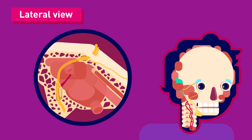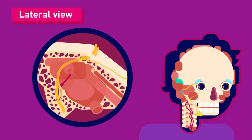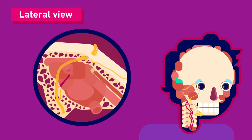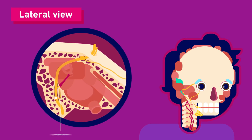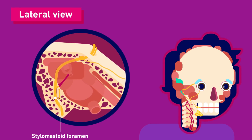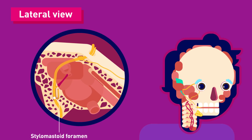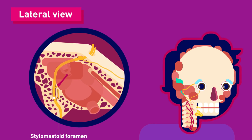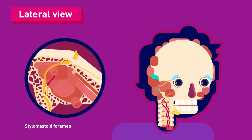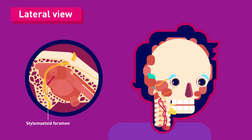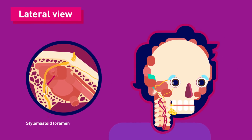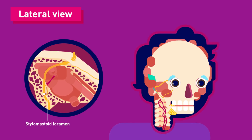The facial nerve then exits the facial canal and the cranium via the stylomastoid foramen, an exit located just posterior to the styloid process of the temporal bone.